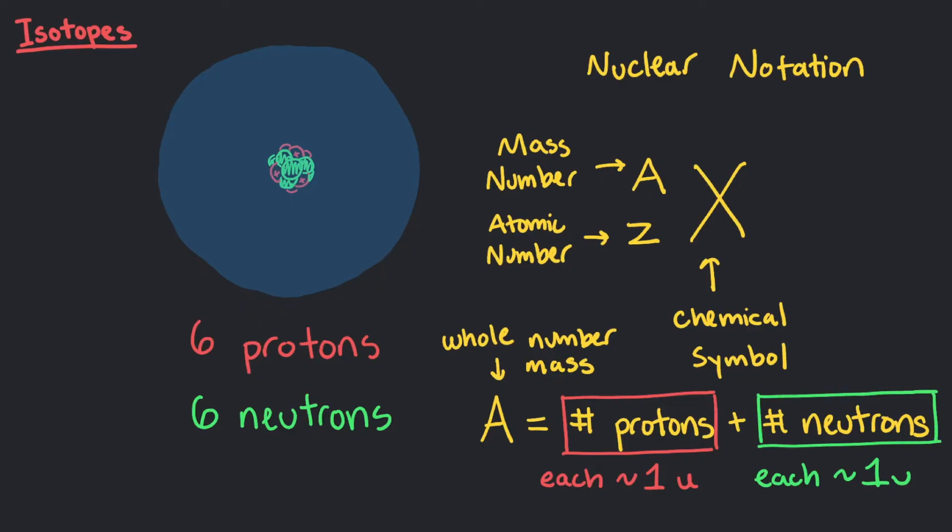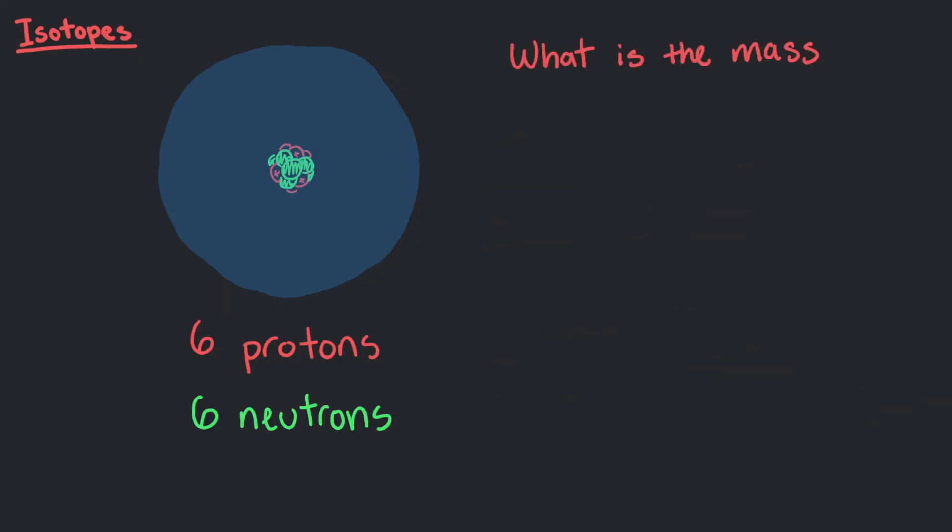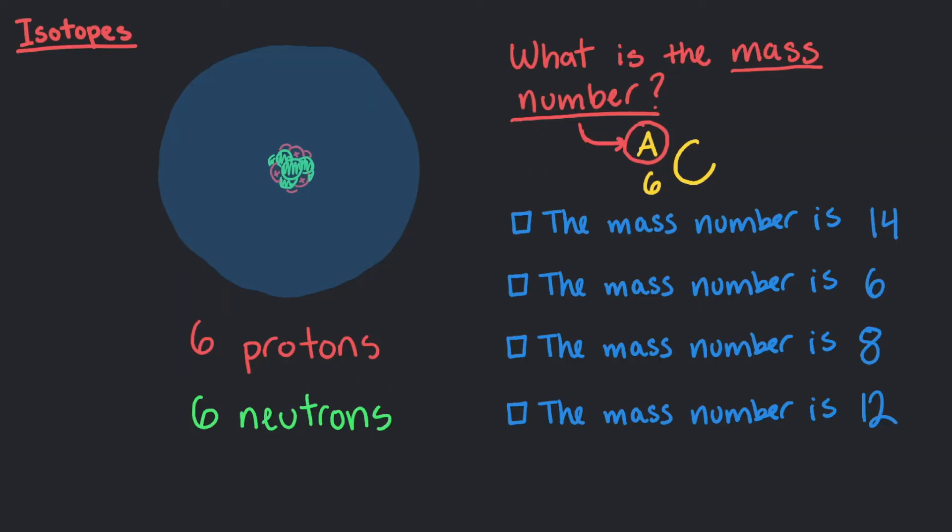Before we mentioned that we have 6 protons and 6 neutrons in one of our carbon isotopes. So what is its mass number? Yes, the mass number is 12 which weighs 12u. We could also write this carbon atom as carbon 12. This is known as hyphen notation, where it is just the element name with its mass number.